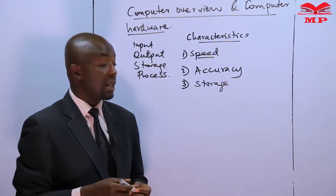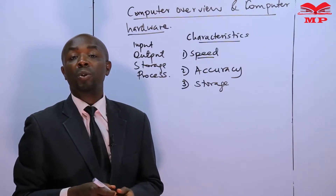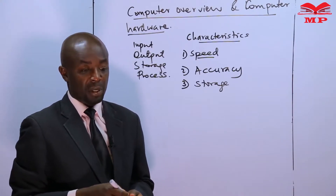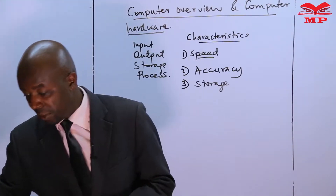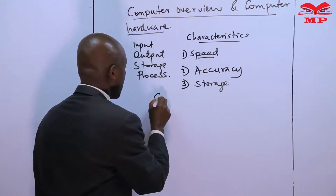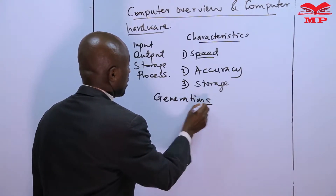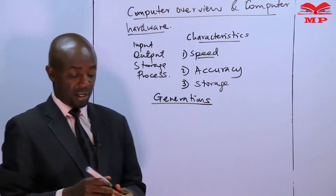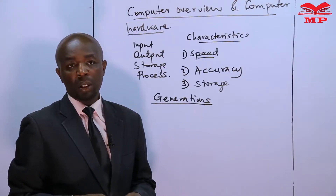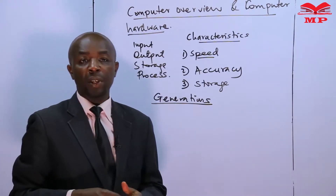For example, you can be listening to music from the VLC player and also be typing data at the same time — that is a characteristic of computer systems. The next part of this lesson talks about computer generations. Just like human beings have existed in a number of generations, computers have also evolved in a number of generations, all the way from the first generation to the fifth generation.